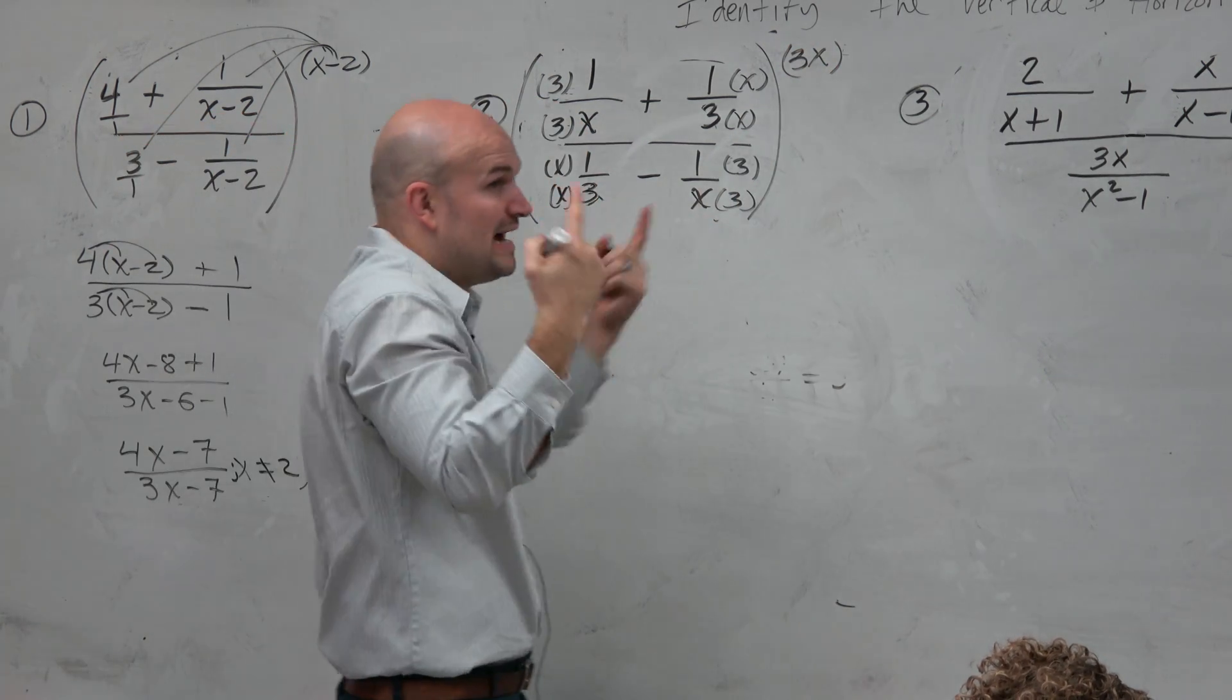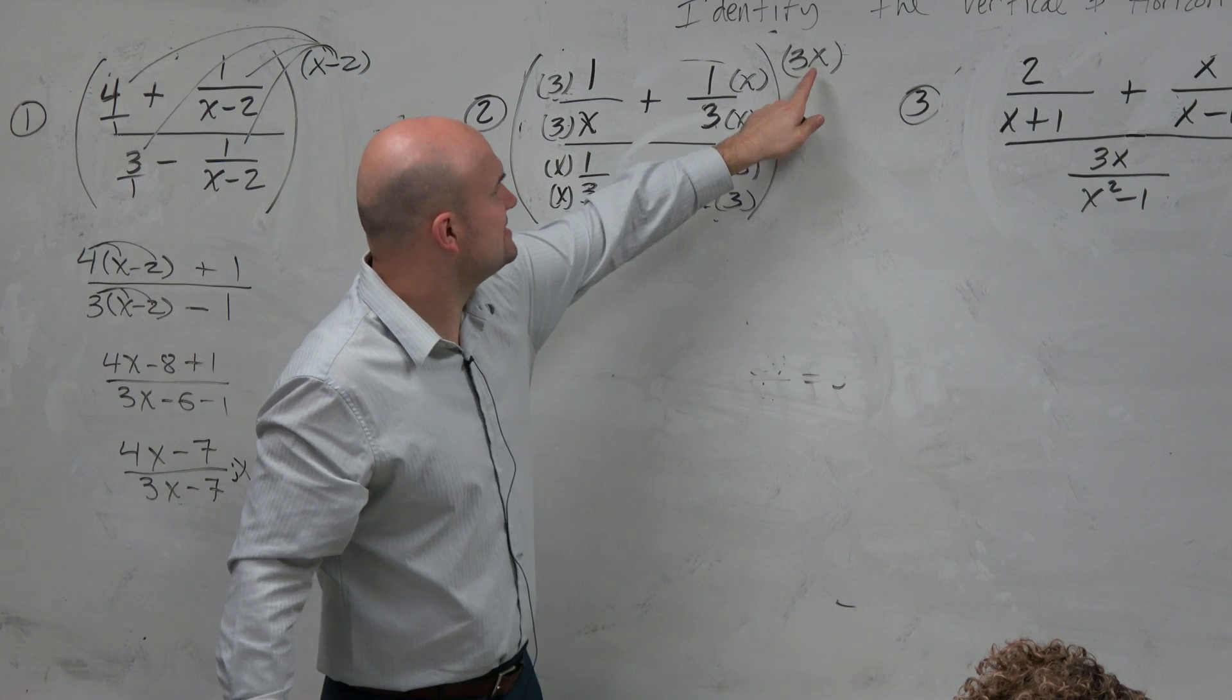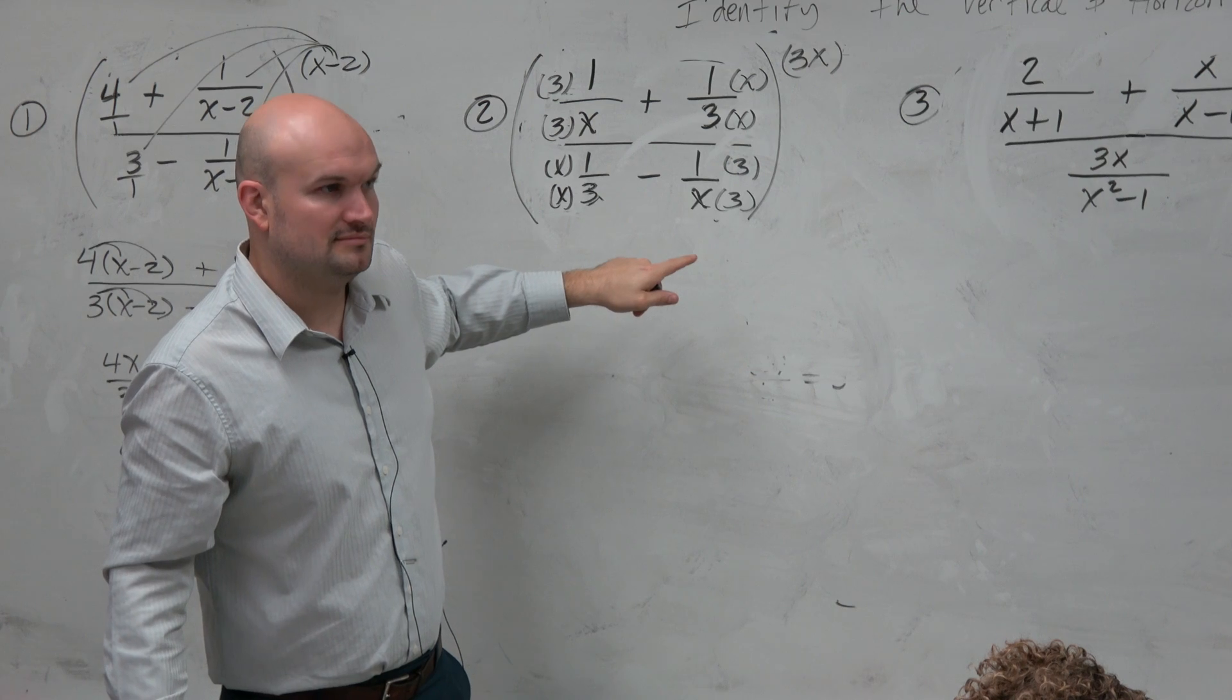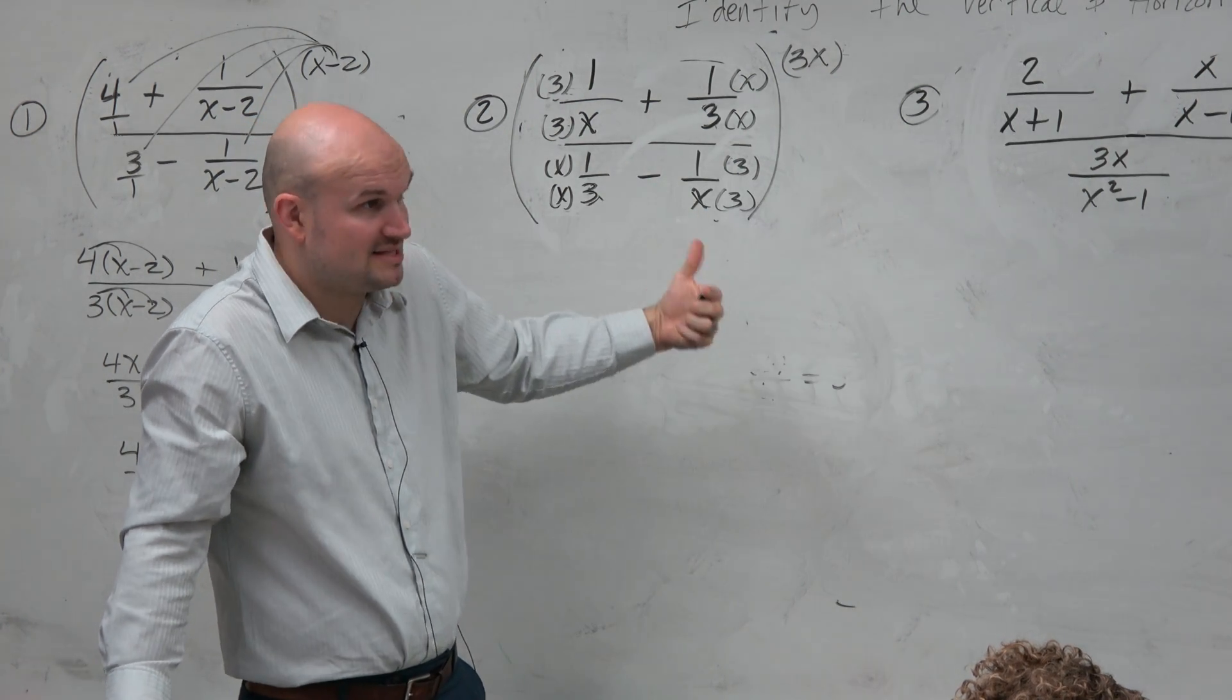which I did over here by first step, what you guys see is all the denominators divide out with the LCD. Right? So mathematically, it works. It makes sense.